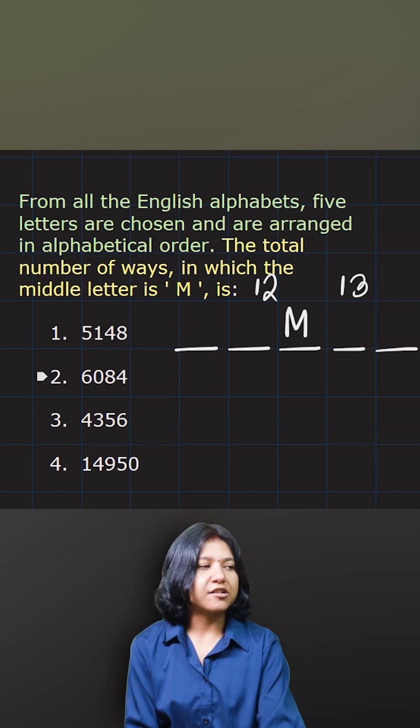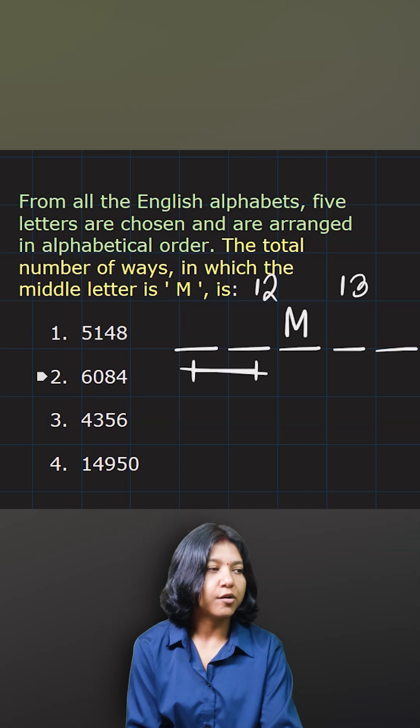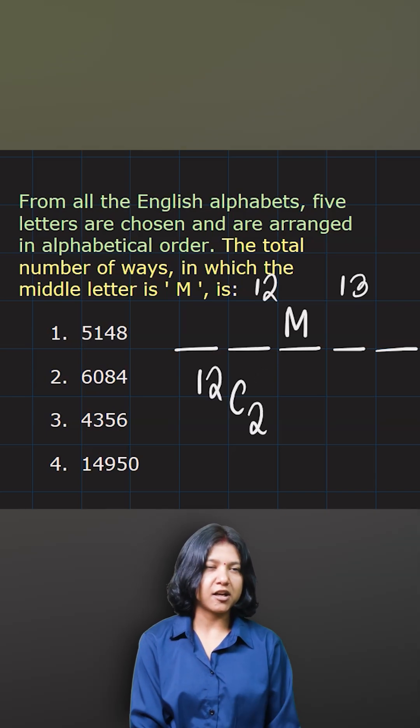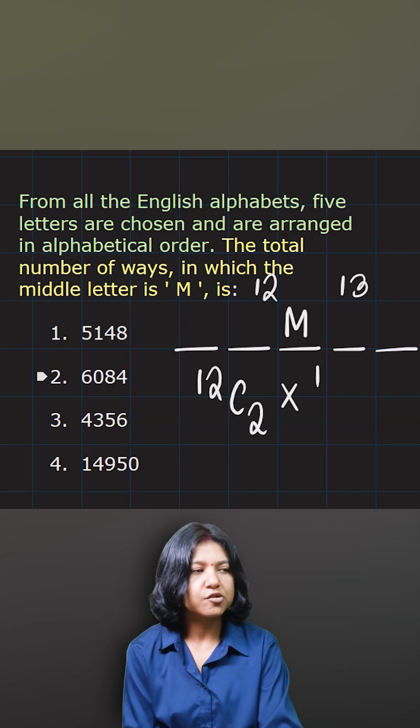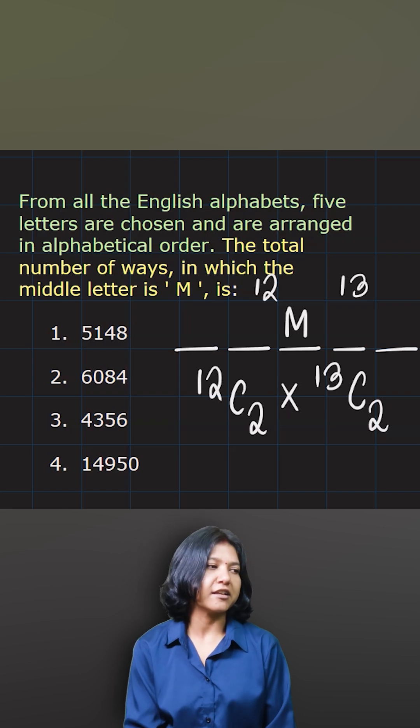Now I have to choose two letters from 12 letters such that they are in alphabetic order. So that is the reason I'll go ahead and say I have to choose two out of 12. There will be that many arrangements possible in that place. While I have 13 letters to choose for the last two places, so I'm going to multiply the two combination values.